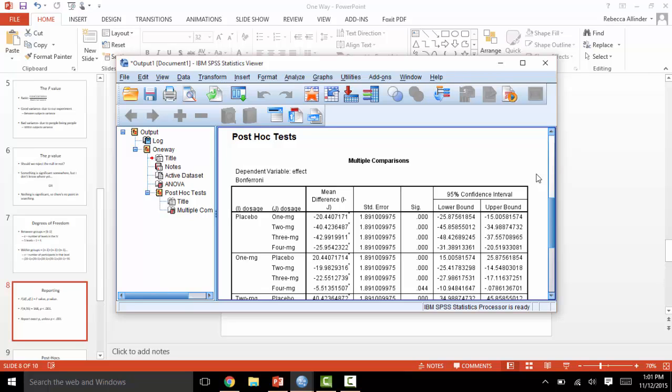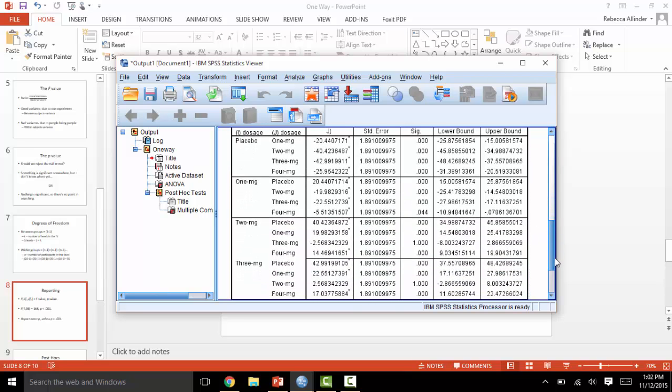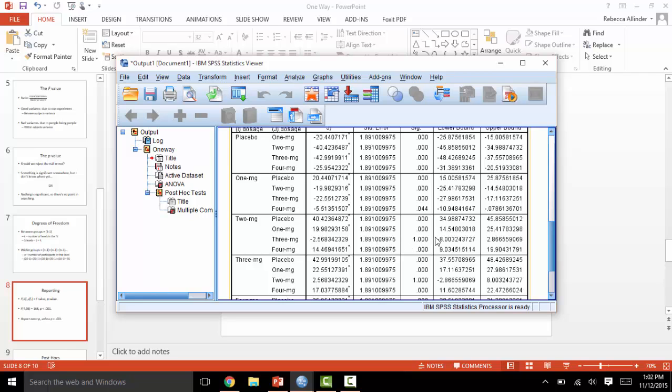The post-hoc test will show a comparison between each and every level. Here we see the placebo being compared to one milligram, the placebo to two, placebo to three, placebo to four, one milligram to placebo, one milligram to two, one to three, one to four, and so on. The sig column will provide the p-value for each comparison. In this case, most levels are significantly different from every other level, except for the difference between two milligrams and three milligrams, which you can see right here and here.